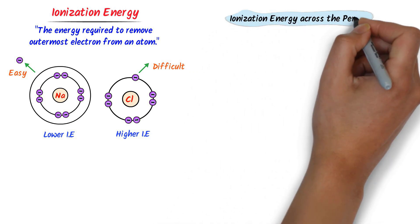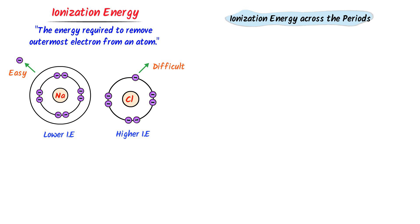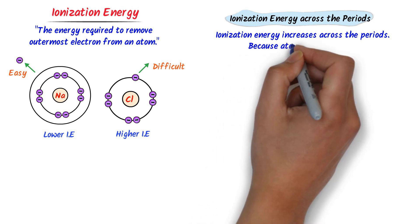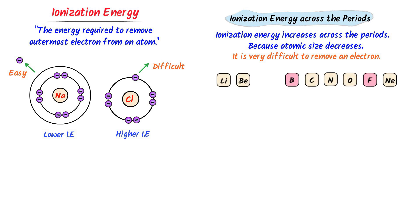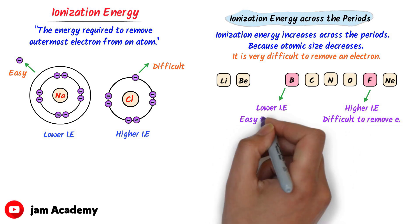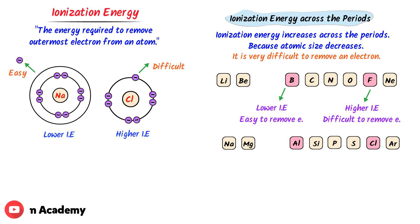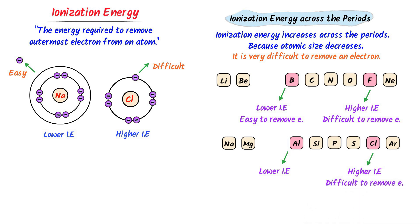Now we will learn ionization energy across the period from left to right. Ionization energy increases from left to right because atomic size decreases from left to right, due to which it is very difficult to remove an electron from the outermost shell. For example, in the second period, boron has lower ionization energy than fluorine because fluorine has smaller size than boron. In the third period, aluminum has lower ionization energy than chlorine because chlorine has smaller size than aluminum — hence chlorine has high ionization energy and aluminum has lower ionization energy.